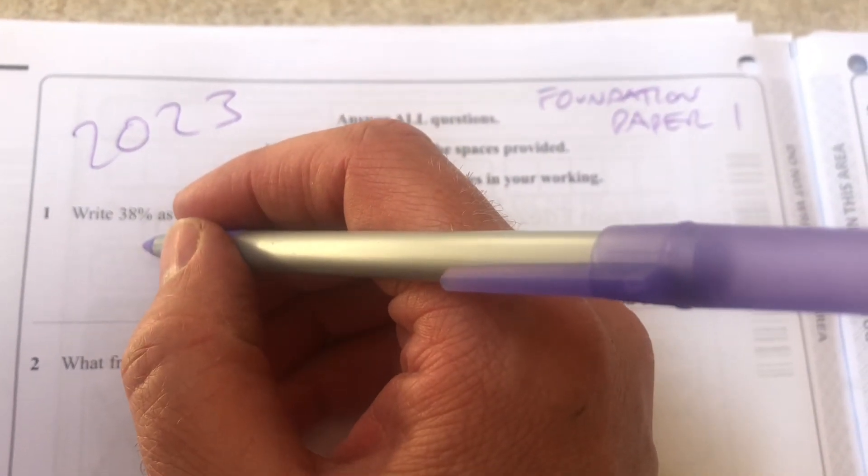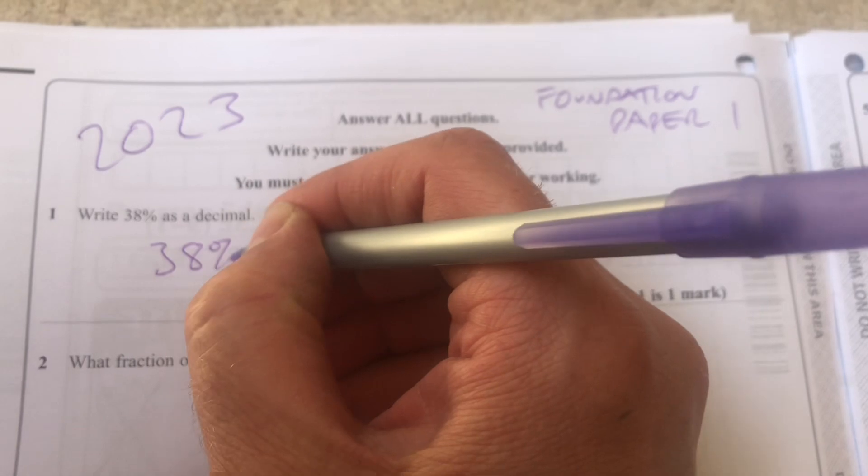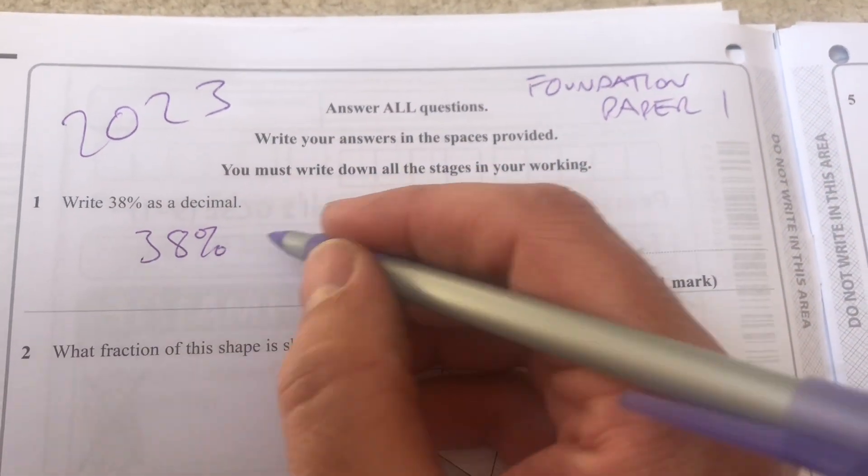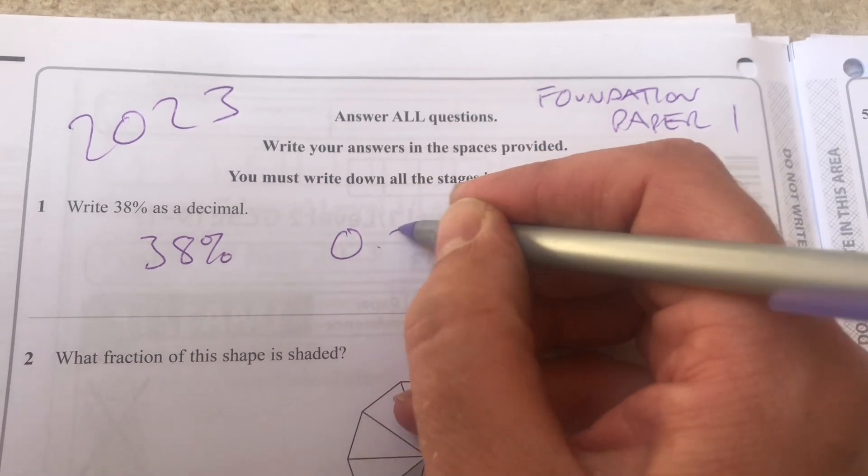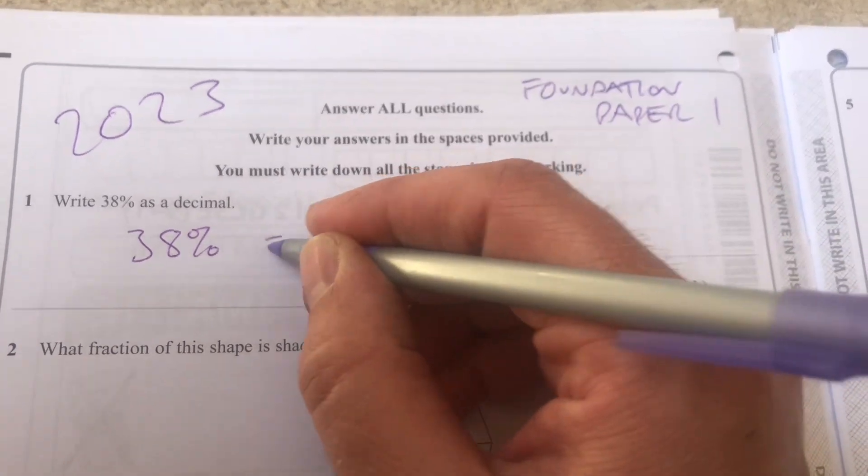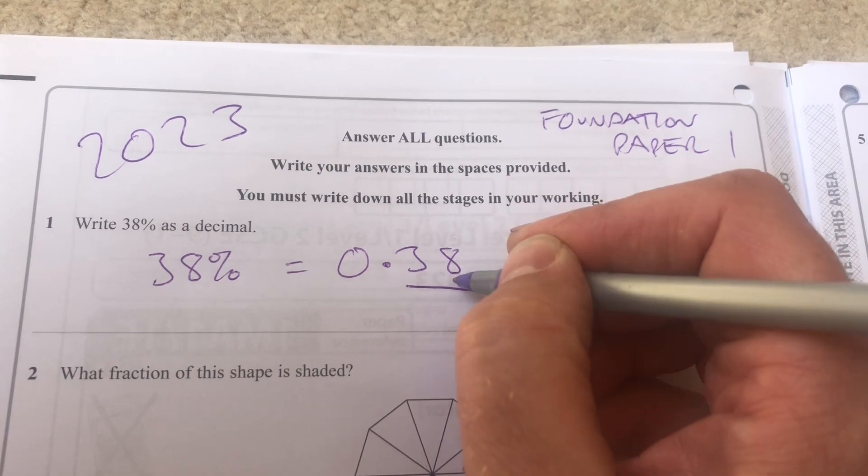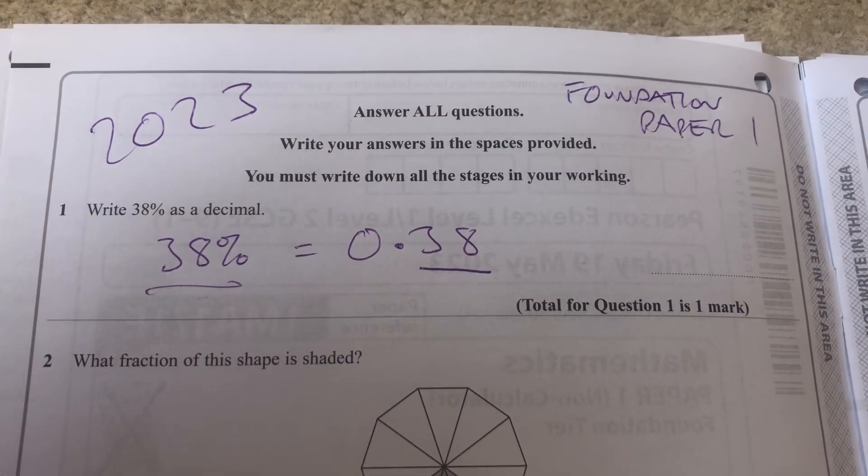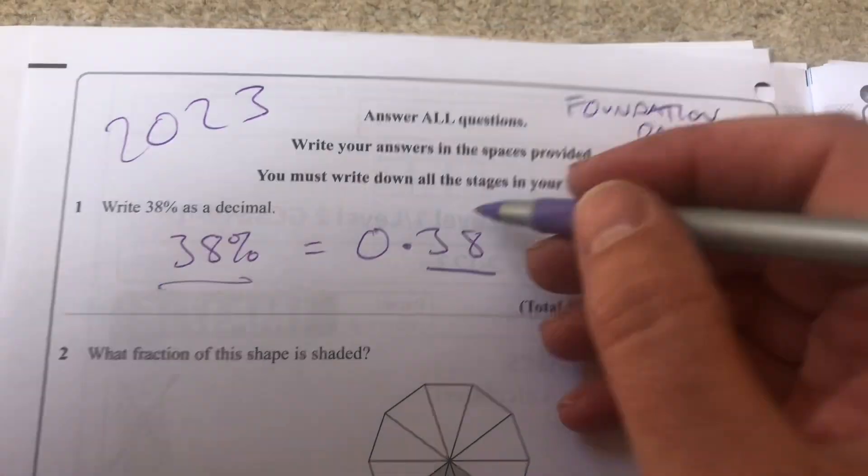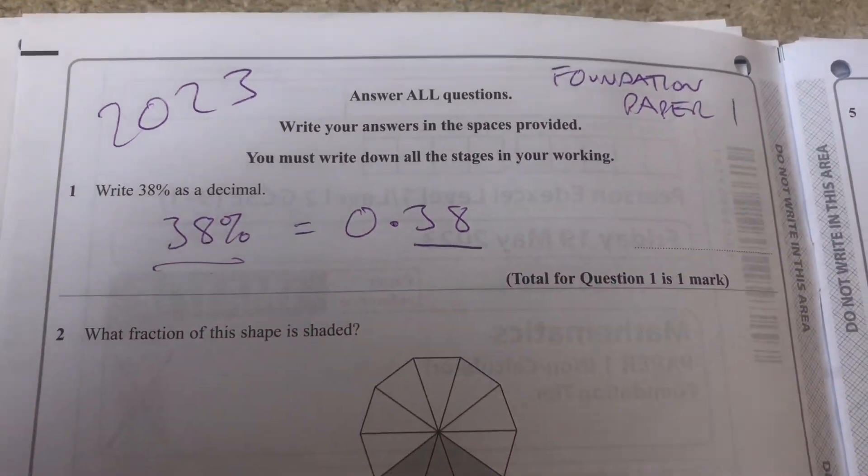Here we've got to write 38% as a decimal. Percent means out of 100, so that's going to be 0.38. That's the tens and the units moved into decimals - the tenths and then hundredths place.